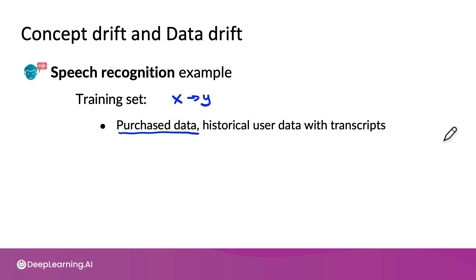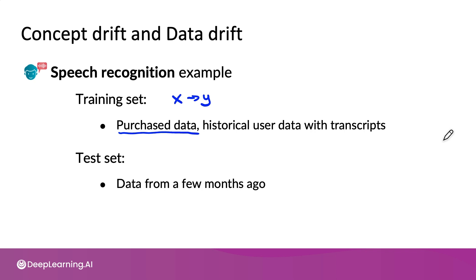After you've trained your speech recognition system on a dataset like this, you might evaluate it on a test set. But because speech data changes over time, sometimes I would collect a holdout validation set as well as a test set comprising data from just the last few months, so you can test on fairly recent data. After you push the system to deployment, the question is: will the data change? After you've run it for a few weeks or months, has the data changed yet again?